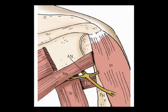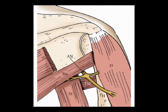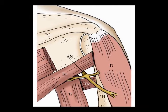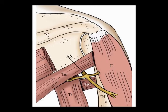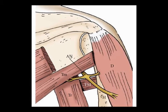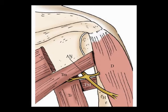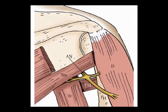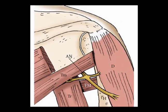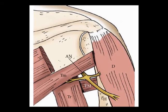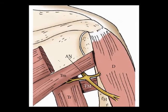Medially, the long head of the tricep, and laterally the humerus bone. So the axillary nerve — sometimes known as the circumflex nerve — and the circumflex humeral artery enter this quadrilateral space.